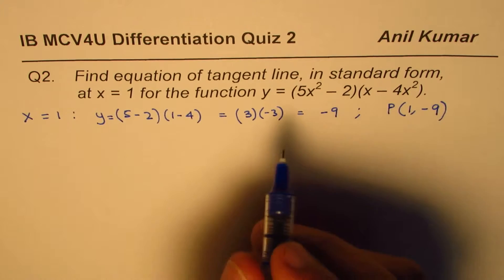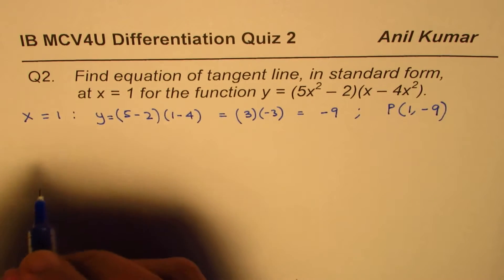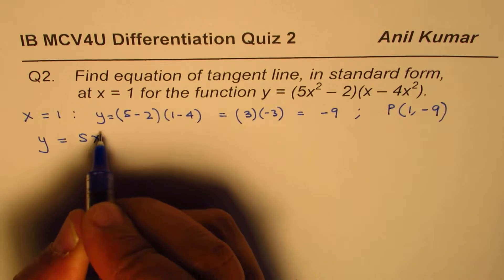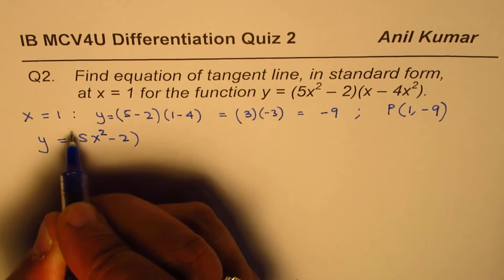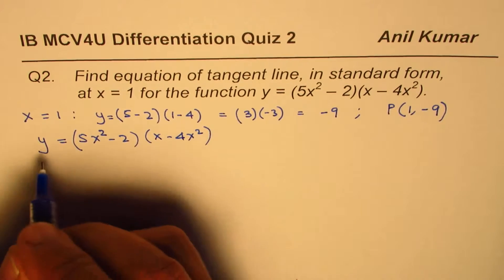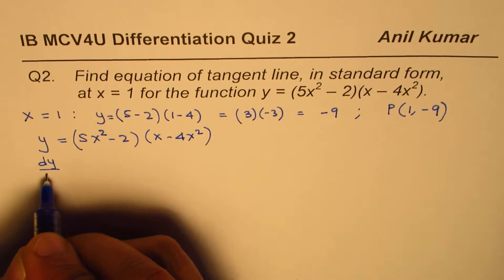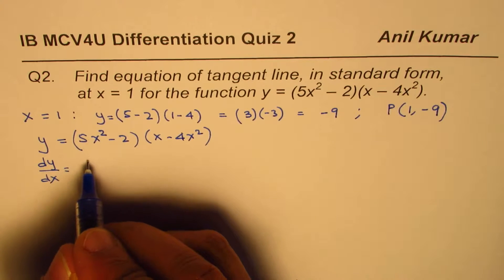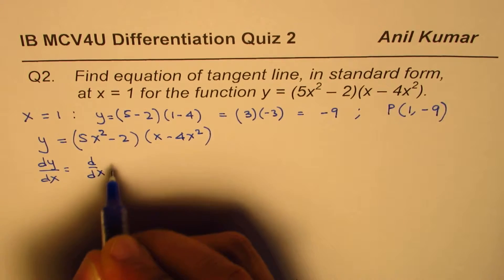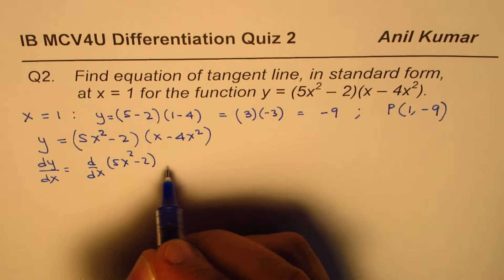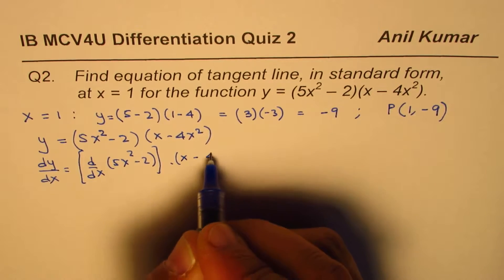Now, we need to find the derivative to get the slope at x equals 1. We know y equals 5x squared minus 2 times x minus 4x squared. Let's find derivative. We'll apply the product rule. So derivative of the first function, which is d/dx of 5x squared minus 2 times the second function, which is x minus 4x squared.